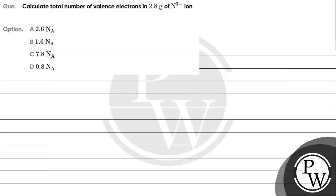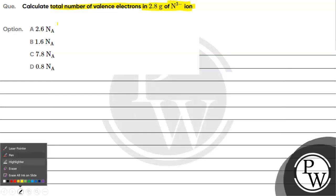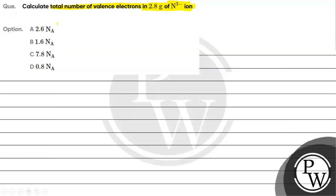Hello children, let's read this question. The question says: calculate the total number of valence electrons in 2.8 grams of nitride ion. Option A: 2.6 into Avogadro's number. Option B: 1.6 into Avogadro's number. Option C: 7.8 into Avogadro's number. Option D: 0.8 into Avogadro's number.